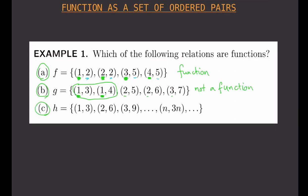Now let's proceed to the third example. H is the set {(1,3), (2,6), (3,9), ...} and so on. This notation means the pattern continues — n refers to natural numbers 1, 2, 3, 4... and so on. So when n is 1, the partner is 3 because 3×1=3; when n is 2, the partner is 6 because 3×2=6; when n is 3, the partner is 9 because 3×3=9. The next pair would be (4, 12) because 3×4=12.